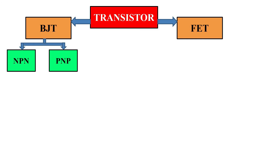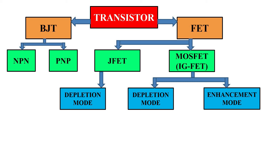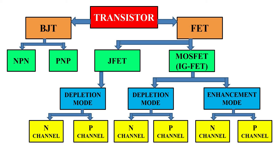In an earlier video we discussed BJT. There are two types of field effect transistors: junction field effect transistor JFET and metal oxide semiconductor field effect transistor MOSFET. MOSFET is also called insulated gate FET. They are further subdivided into depletion and enhancement mode FETs. Note that JFET has only depletion mode of operation. Both of these can be either N-channel or P-channel devices.